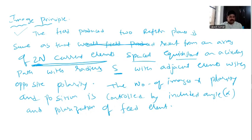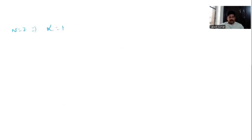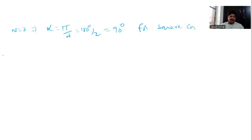Let us see the pattern of multiple images on a circular path for different angles. For n equals 2, the value of alpha is π/n, that is 180 divided by 2, which equals 90 degrees — the square corner reflector. The total number of elements is 2n, so 2 into 2 equals four elements.